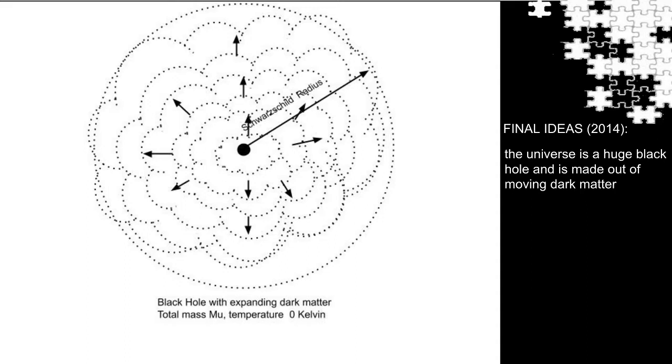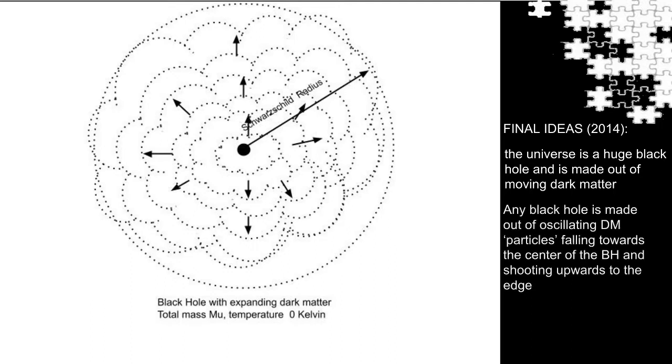Because dark matter falls freely and frictionless, all particles will oscillate up and down from event horizon to event horizon. The maximum speed in a black hole is reached in the center and is by definition the speed of light. The temperature is zero degree Kelvin, the absolute zero temperature.